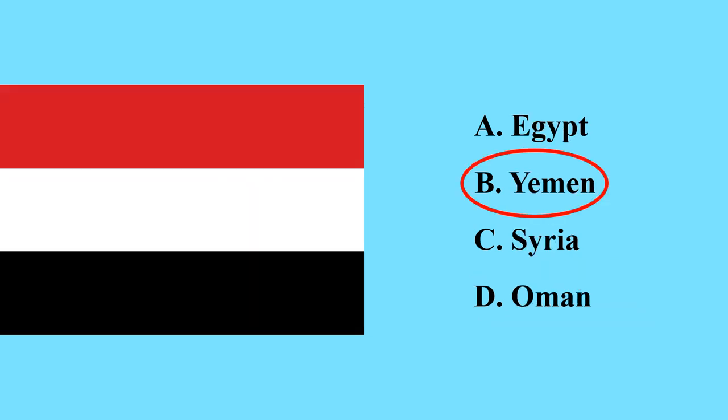This is the flag of Yemen — Yemen is a country in the Gulf of Aden region in the Arab world; its capital city is called Sana'a. Yemen is also considered a transcontinental country because it has an island territory that geographically belongs to Africa.